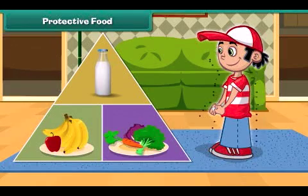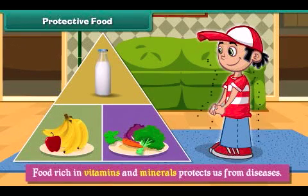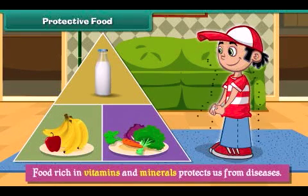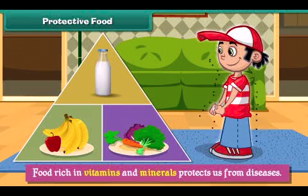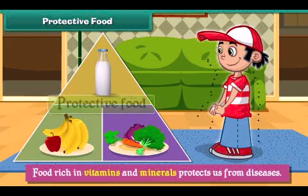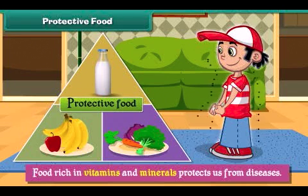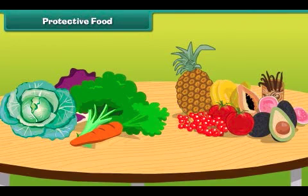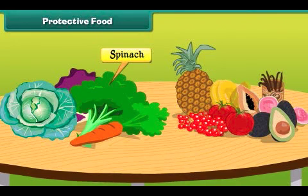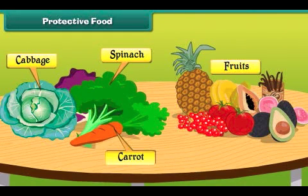Food rich in vitamins and minerals protects us from diseases, therefore it is called protective food. Green leafy vegetables such as spinach and cabbage, carrots, and fruits have lots of vitamins and minerals.